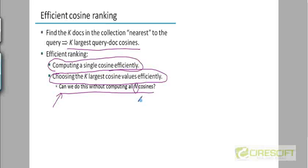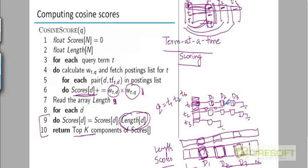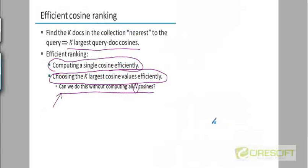But we want to do even better than that. We want to be even more efficient than this. Can we do this without computing the score between the query and all of these documents, even within these three postings lists? That's something we'll look at.